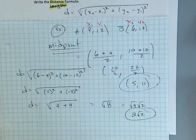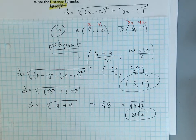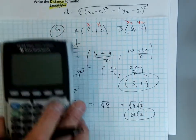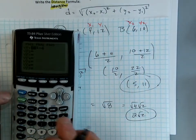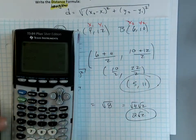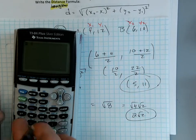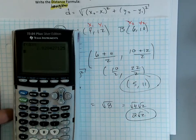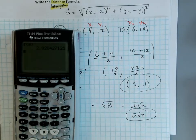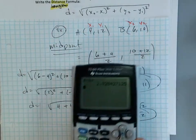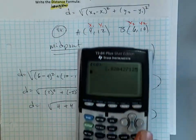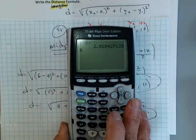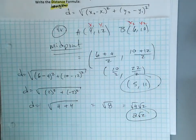8 is 4 times 2, so the square root of 8 simplifies to 2 square roots of 2. That's a much better answer. If you need a decimal I would take it, but if you want an exact answer, the square root of 8 gives you an ugly irrational number. 2 root 2 is a much better answer.